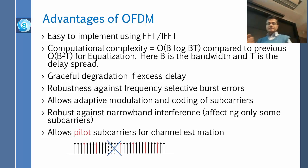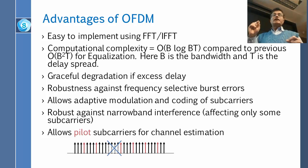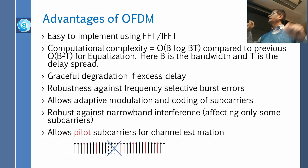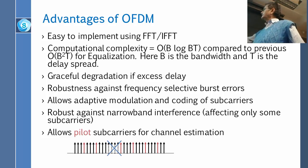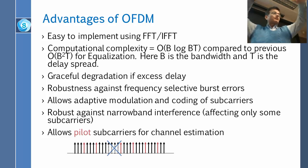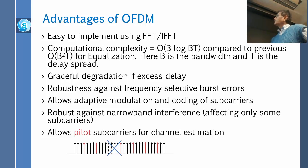OFDM also allows adaptive modulation and coding of subcarriers. Adaptive modulation means each frequency is modulated differently depending upon its own interference level. So if there is more interference on one frequency, it will be modulated at BPSK; another could be modulated at QPSK; another at 16-QAM and so on. It is also robust against narrow band interference — a small band of noise affecting one frequency — which is essentially the same point as frequency selectivity.